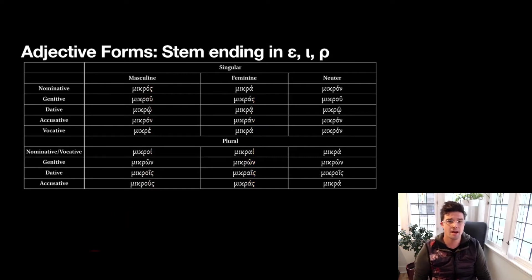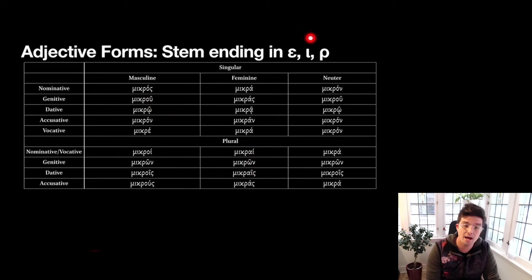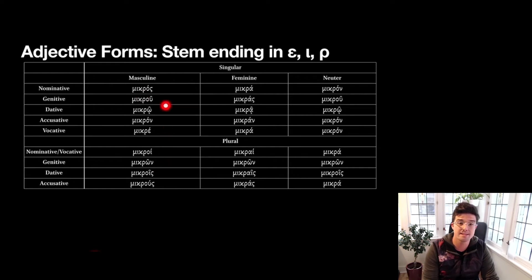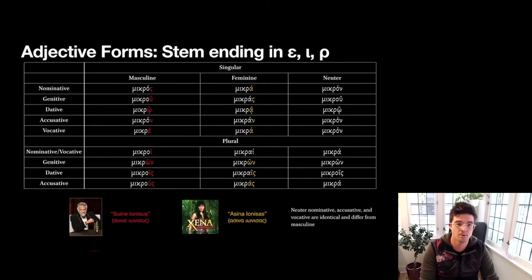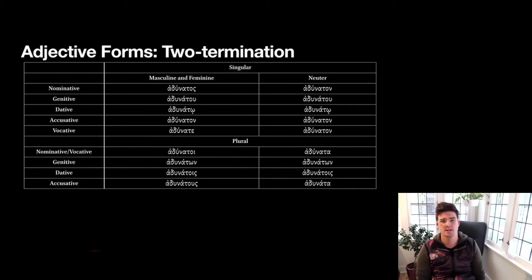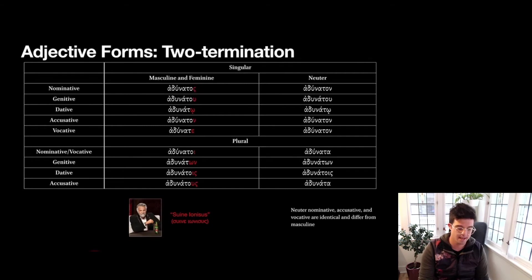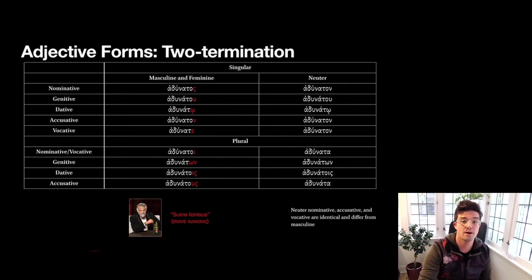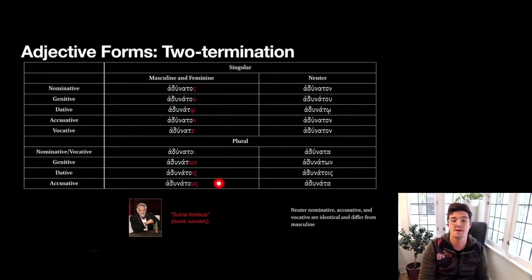For nouns whose stem ends in epsilon, iota, or rho, the endings look like mikros with that rho ending to the stem. This looks exactly the same as the last paradigm, as does the masculine/neuter side. The only difference is in the first declension feminine, which uses all alphas throughout the singular. Then for two-termination adjectives, these are built on the second declension — swain ionisus again — but we recognize that the feminine and the masculine are together here; there is no separate form for the feminine, as it is incorporated into the endings we would normally associate with the masculine gender.